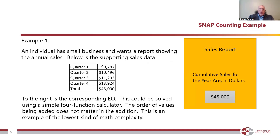Here's the first example. An individual has a small business and wants a report showing the annual sales. This individual already has all the supporting data and wants a software application written to total them all up. This is very simple — it could be solved on a four-function calculator. It's worth four function points, and the answer, this one field, is $45,000. From requirements gathering to programming to testing to implementation, this would be a pretty simple and quick report to do. This is an example of the lowest level of mathematical complexity.